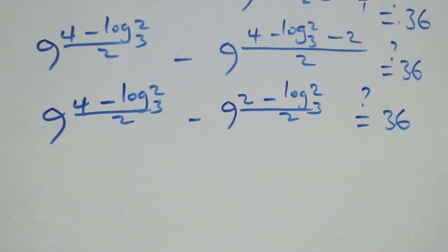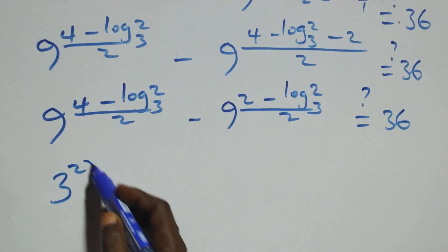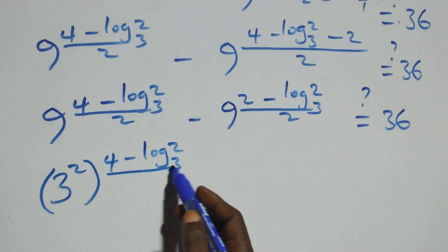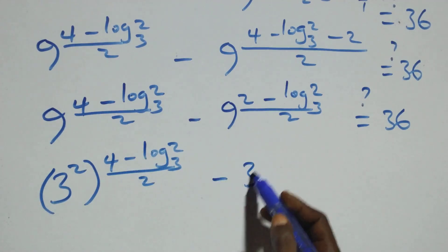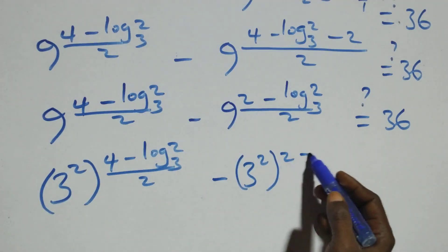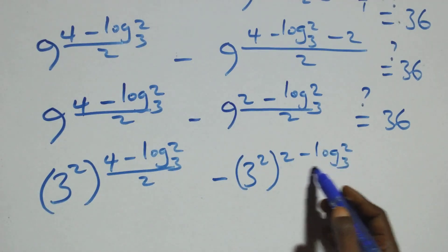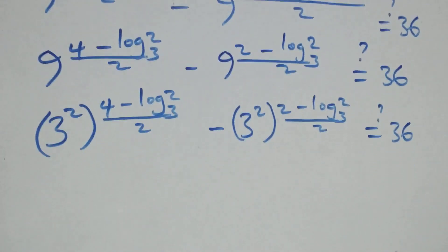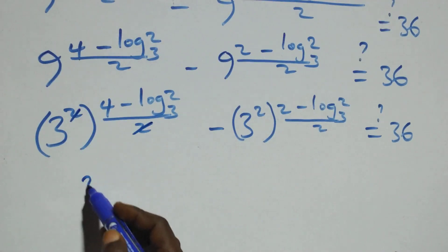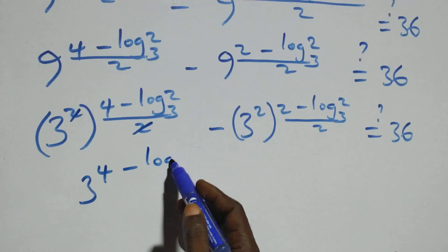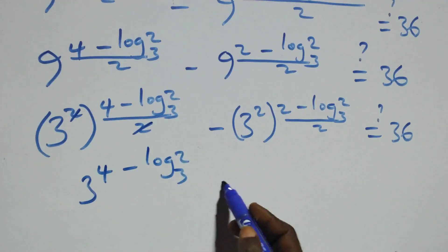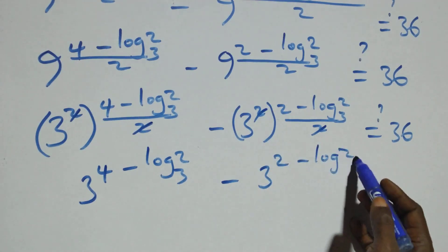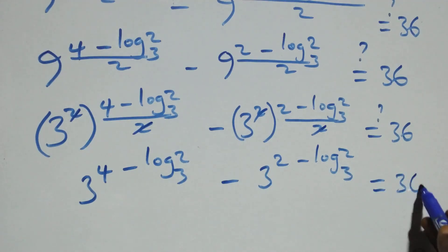We express 9 as 3 squared. So (3 squared) raised to power (4 minus log₃2)/2 minus (3 squared) raised to power (2 minus log₃2)/2. Multiplying the powers, the 2's cancel, giving 3 raised to power (4 minus log₃2) minus 3 raised to power (2 minus log₃2), equals 36.